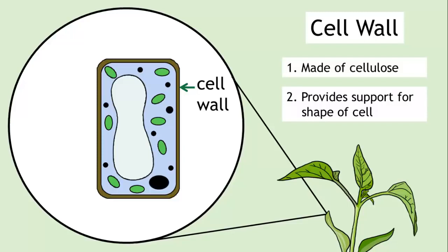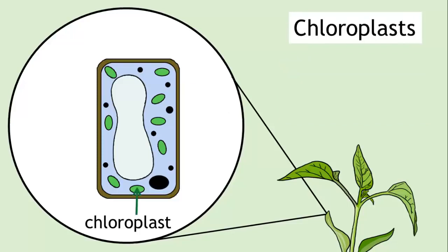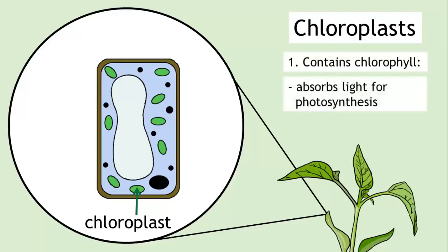Plant cells also contain chloroplasts, which are filled with a chemical called chlorophyll. Chlorophyll enables plant cells to absorb light so it can be used in photosynthesis. Chlorophyll is also the substance that gives plants their green colour.